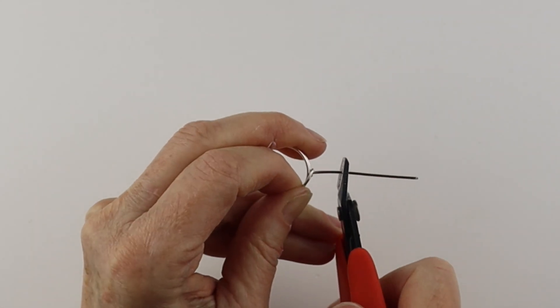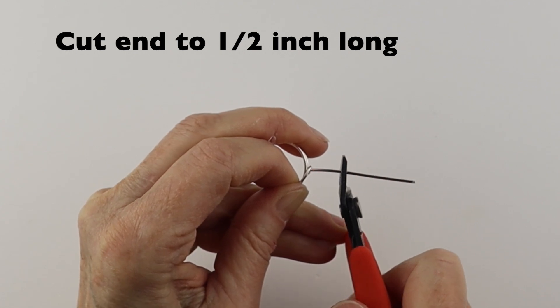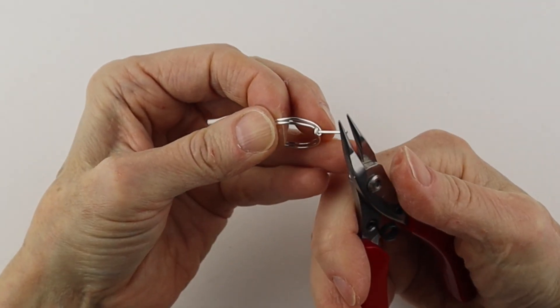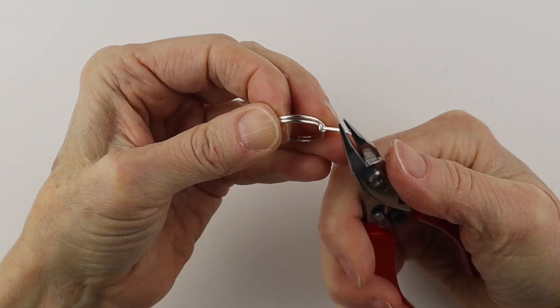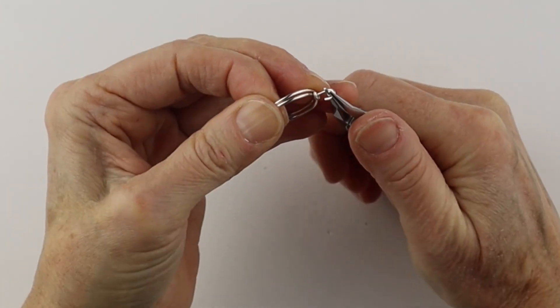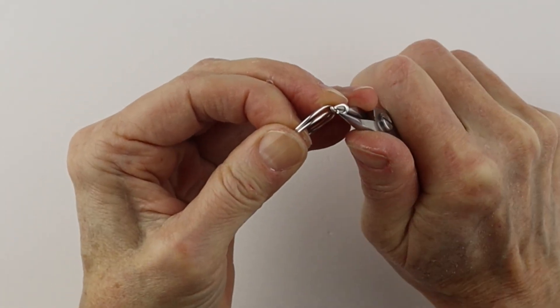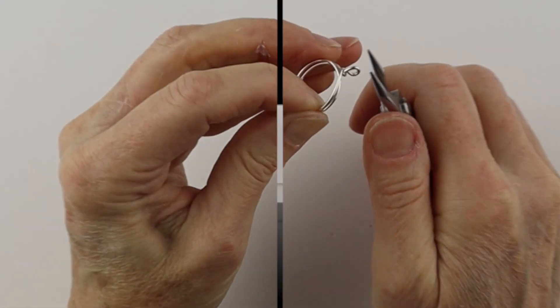Cut this to about half an inch. And then take your round pliers and make a little loop. That end's going to be flush in there.